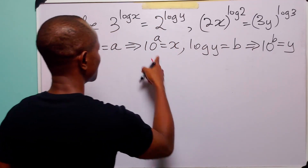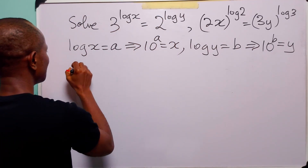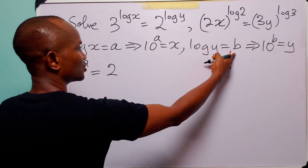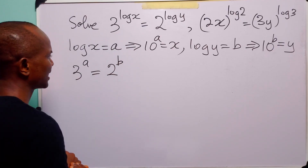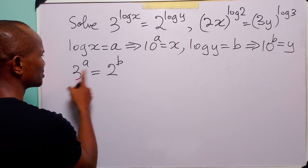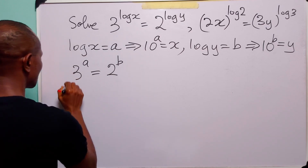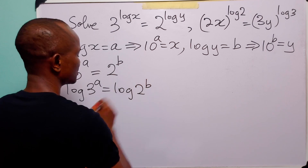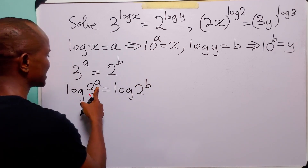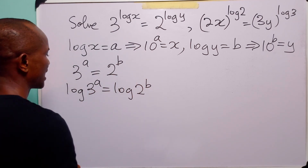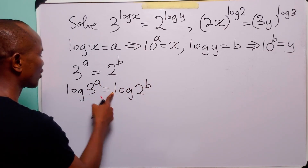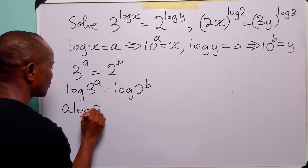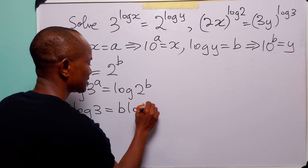With these two substitutions, the first equation becomes 3 to the power a is equal to 2 to the power b. The next thing we do is take log of both sides. We get log 3 to the power a equals log 2 to the power b, and applying the power rule of logarithms we bring down a and b to become multipliers: a times log 3 is equal to b times log 2.